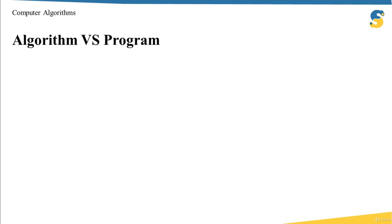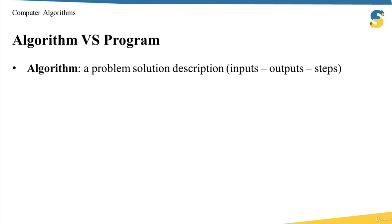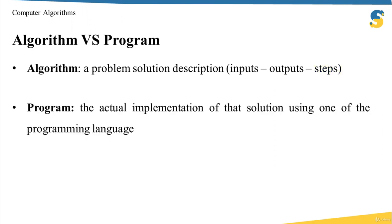Now that we understand the meaning of algorithm, we should be able to discriminate between an algorithm and a program. Simply put, an algorithm is just a problem solution description in which we define inputs, outputs, and the steps, whereas a program is the actual implementation of that solution using one of the programming languages. The algorithm represents the solution whereas the program represents the implementation.